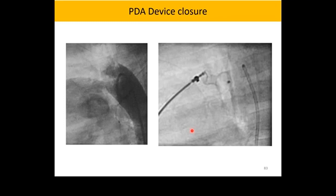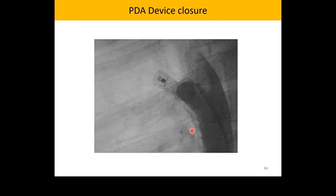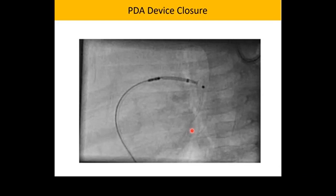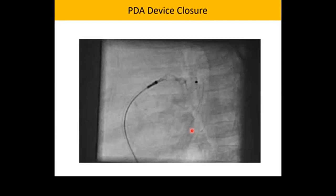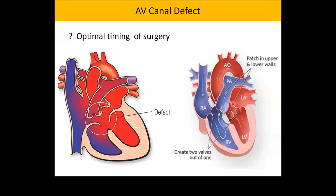For larger PDAs, a device plug is used and deployed via the cath lab; the procedure takes 20-30 minutes and the patient is discharged the following day without prophylactic medication. Aortopulmonary window is a large communication between the aorta and pulmonary artery; it can be closed with a plug in the cath lab or by surgery. AV canal defect — with ASD, VSD, and a single AV valve — requires closure of both defects and reconstruction of the single valve into two. These develop pulmonary hypertension very early, so surgery should ideally be done within the first six months of life.